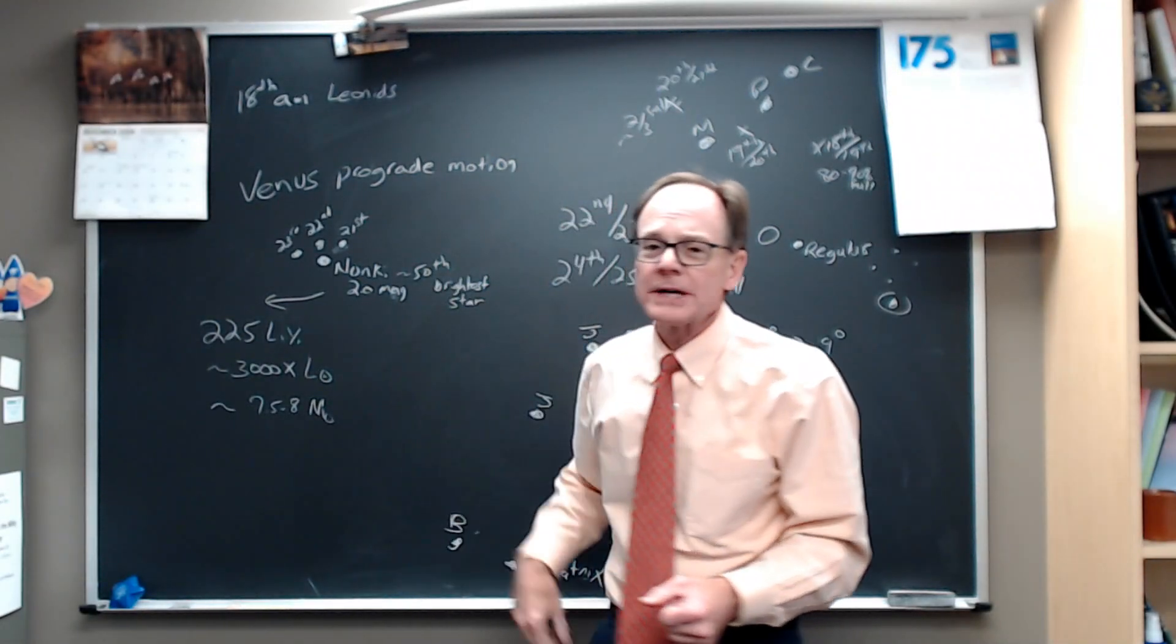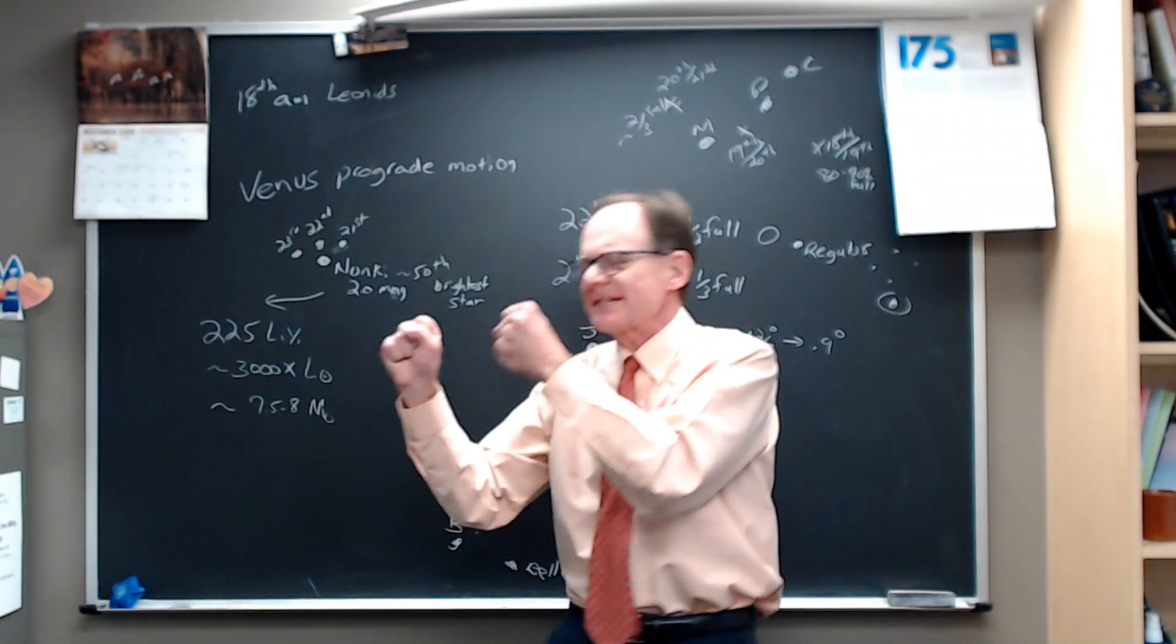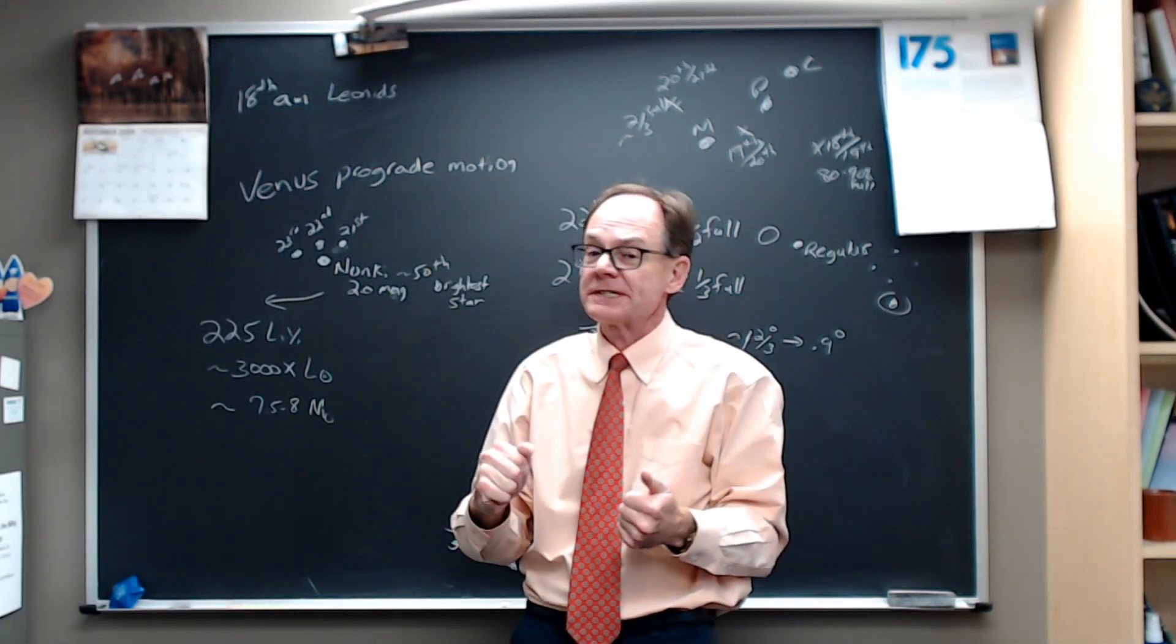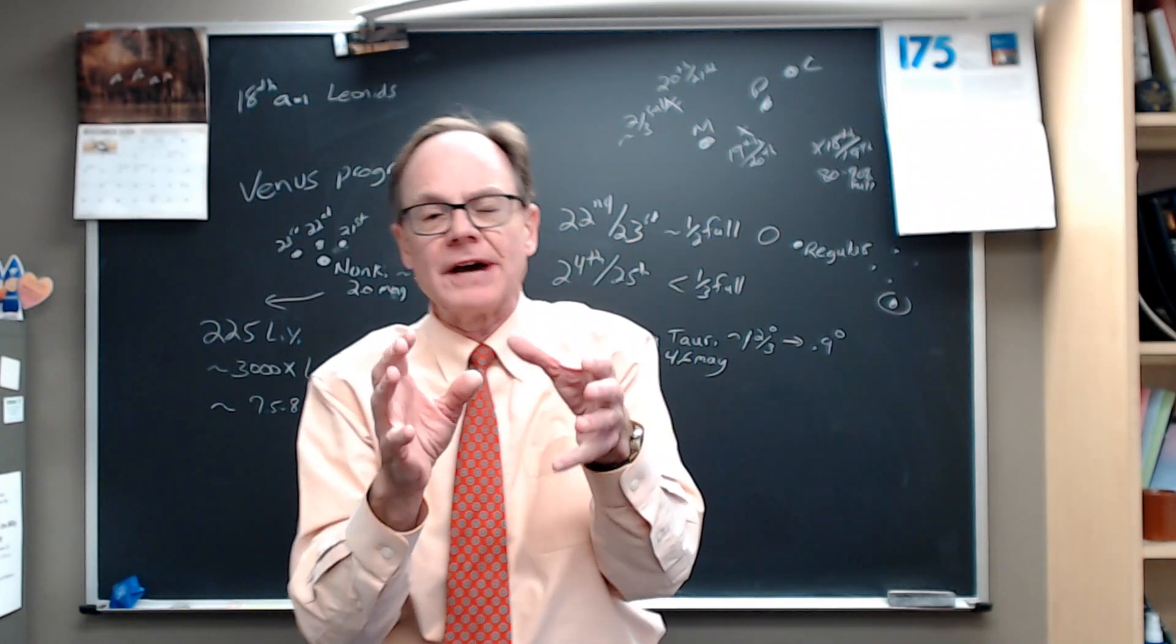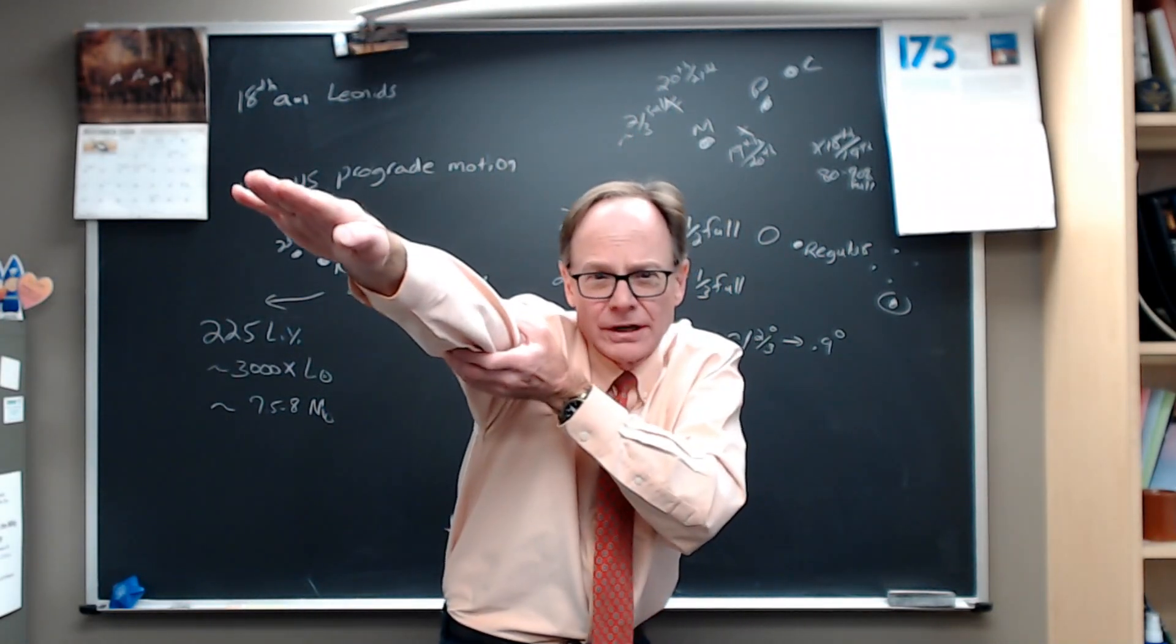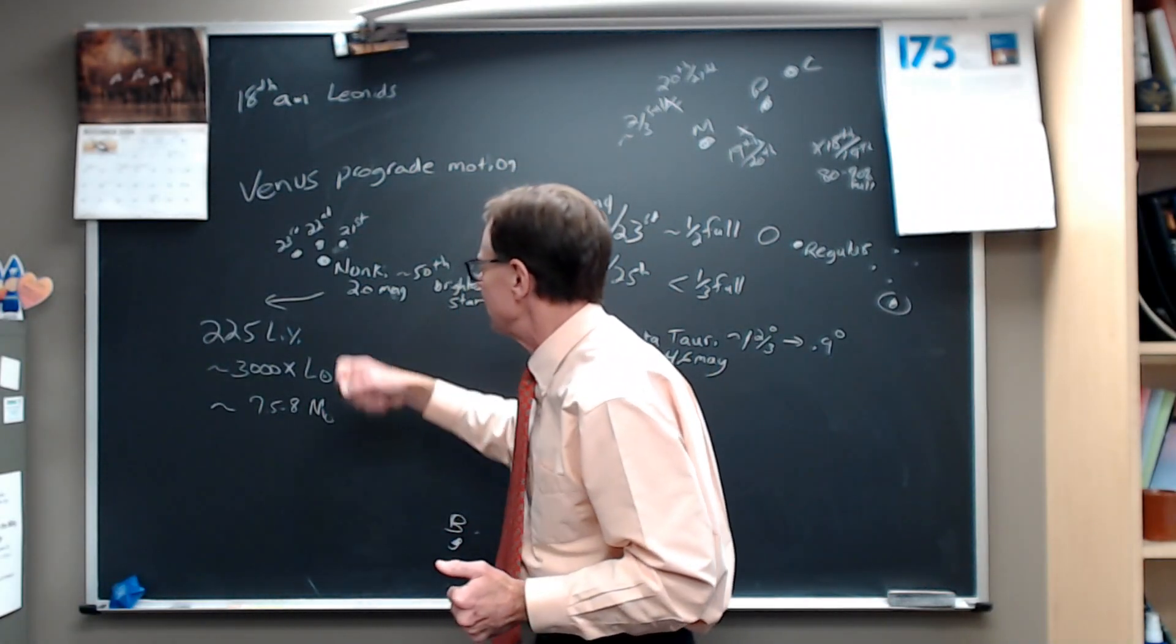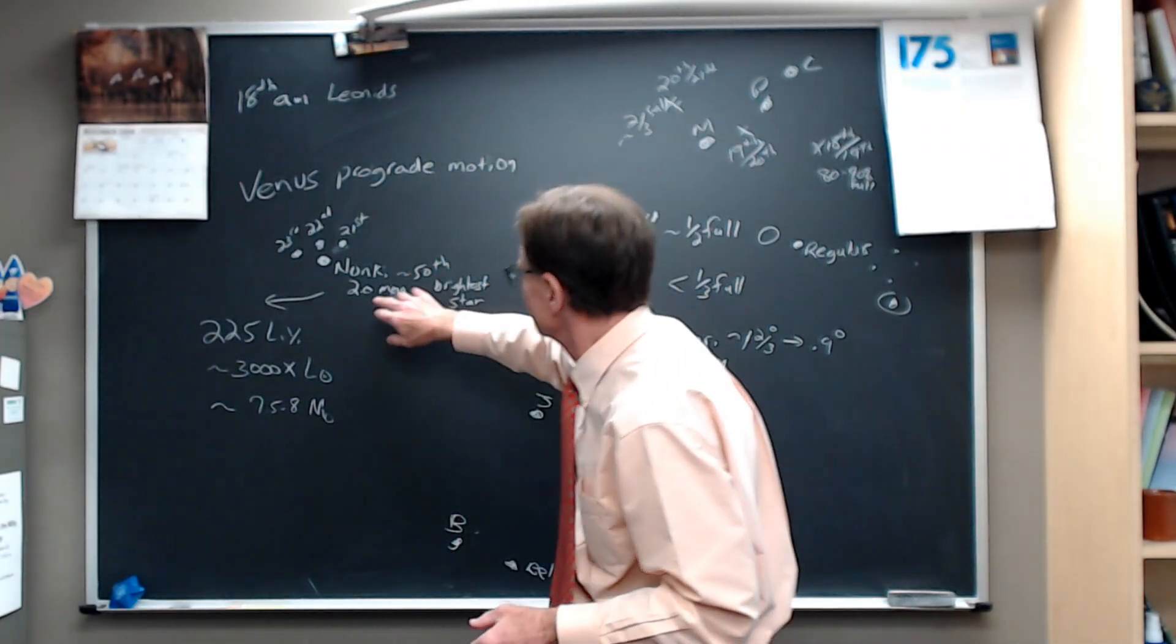Nunki is a bright star, 2.0 magnitude. As Venus is in prograde motion, it's getting further from the sun and staying up later after sunset, getting easier to see. Right now, it sets about two and a half hours after sunset. You still have to look through a lot of atmosphere low on the horizon, so it's not great. But my guess is, 45 minutes to an hour after sunset, you should have no trouble seeing Nunki, this star in Sagittarius.